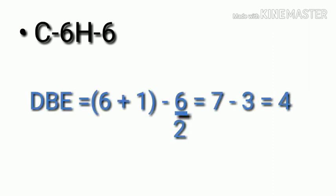For C6H6, the double bond equivalent value is: (2×6 + 2 - 6) / 2 = (12 + 2 - 6) / 2 = 8/2 = 4. Structures with DBE of 4 could have 4 pi bonds, 4 rings, 2 pi bonds and 2 rings, etc. The most stable structure with this formula is benzene.